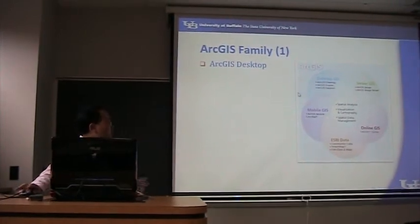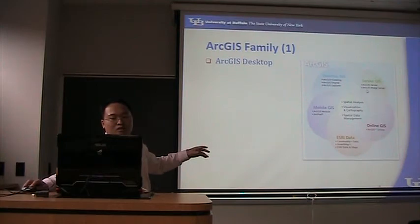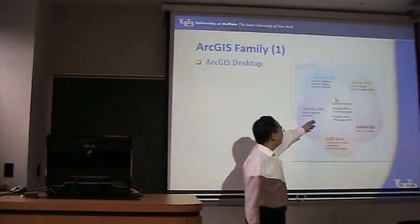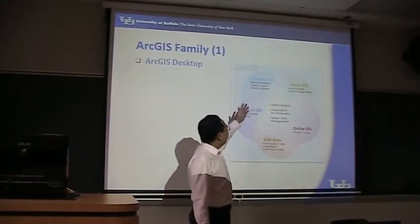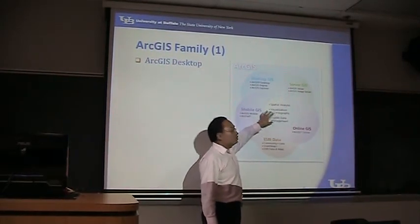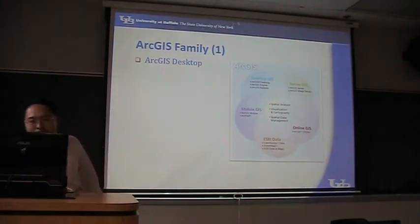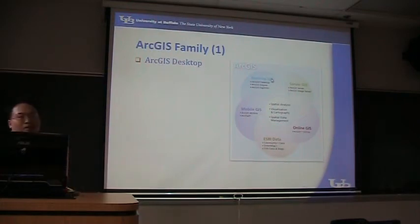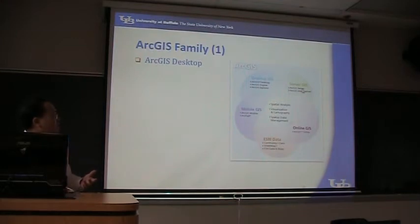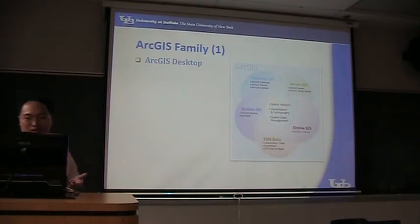ArcGIS is a very big concept. They want to do three things: spatial analysis, visualization, cartography, and spatial data management — those are the three core things. But they divided the whole scope of ArcGIS into five parts: desktop applications, server GIS for building GIS servers such as Google Maps, online GIS, and mobile GIS, so you can access GIS information on your mobile device such as a cell phone or other customized devices.